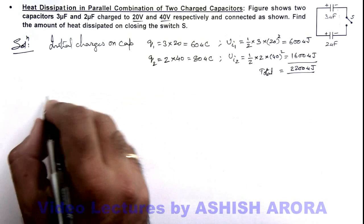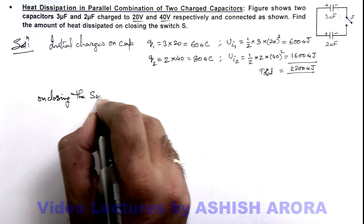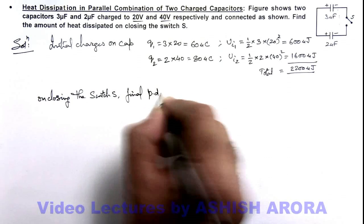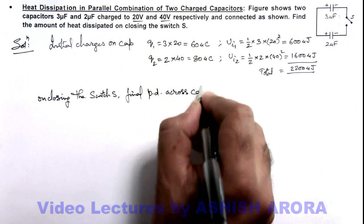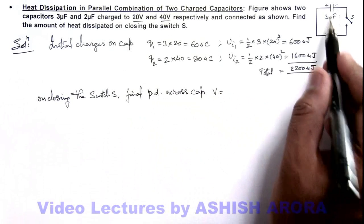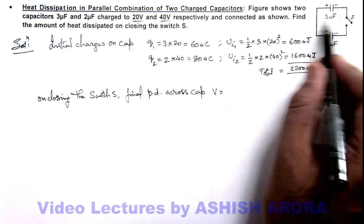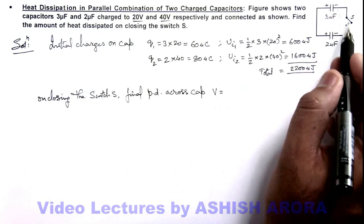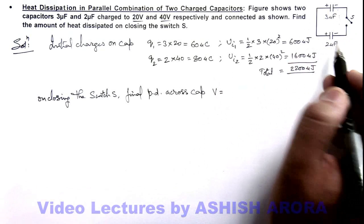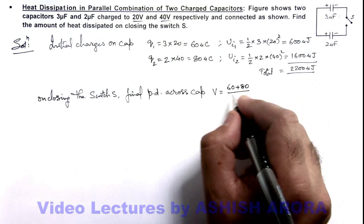On closing the switch, if we calculate the final potential difference across capacitors, this can be given as total charge on the two, which is 60 + 80 = 140 microcoulombs, because the two positive sides are together and negatives are together. So it'll be 60 plus 80 divided by...